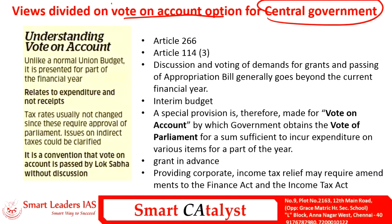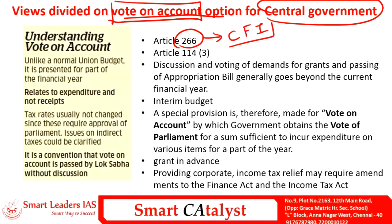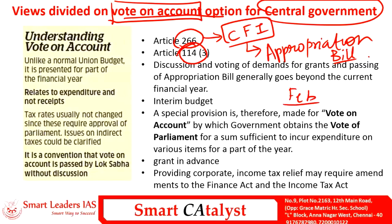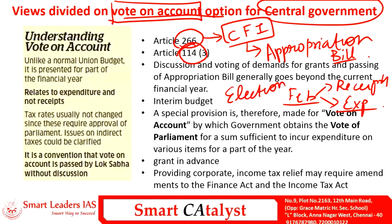The first article is 'Views Divided on Vote on Account Option for the Central Government.' In our constitution, Article 226 says that any amount can be withdrawn from the Consolidated Fund of India only via approval of Parliament. Article 114, Clause 3 specifically mentions that such a withdrawal can be made only with the help of an Appropriation Bill. Every year in the month of February, the annual budget is presented by the government, dealing with both receipts as well as the expenditure part for the coming year. However, if the year is an election year, a normal budget is not presented and an interim budget is presented instead.